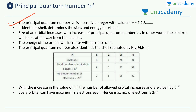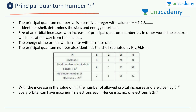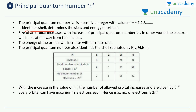The principal quantum number N is a positive integer with values from 1 up to infinity. It can take only values which are positive integers. The principal quantum number is nothing but the orbit number — it identifies the shell. A shell is nothing but an orbit, and it determines the sizes as well as the energies of the orbits. As we said previously, if you have the orbit number, you can find out the radii of the orbit as well as the energy of an electron in that orbit. The size of an orbital increases with the increase of principal quantum number N.